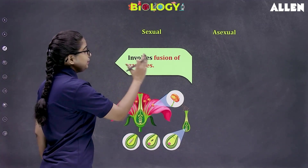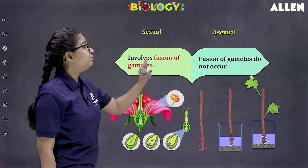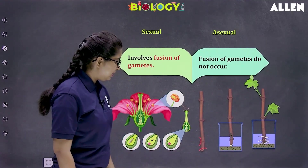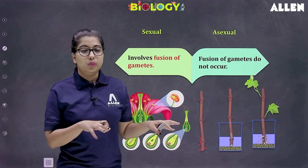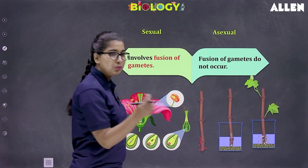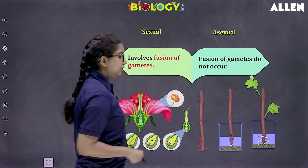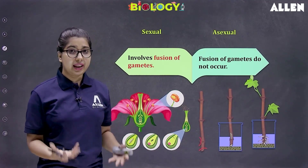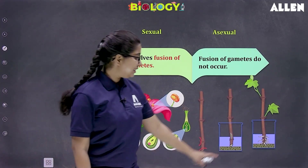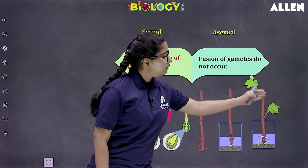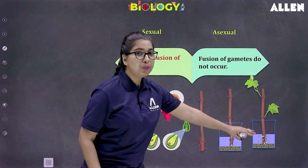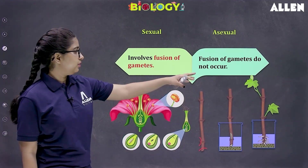In sexual reproduction, fusion of gametes is involved. In asexual mode of reproduction, no fusion of gametes takes place. Directly from the vegetative part — for instance, I will take stem — I take a stem cutting that should have at least one bud, put it into the soil. We can add chemicals to initiate rooting. Rooting initiates, initial leaves come out, the shoot system develops, and it grows into an entire new separate individual. So we can see how through the stem we got a new plant. This is reproduction through the vegetative parts — asexual mode of reproduction. No flowers, no formation of gametes, and no fusion of gametes is occurring.